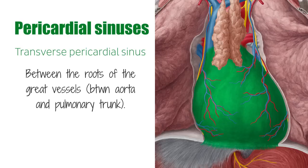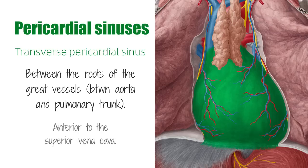The transverse pericardial sinus lies posterior to the ascending aorta and the pulmonary trunk, and anterior to the superior vena cava.